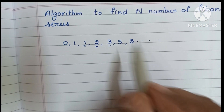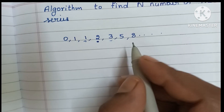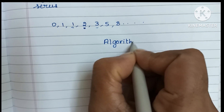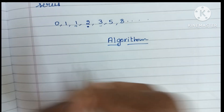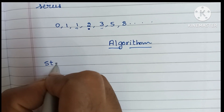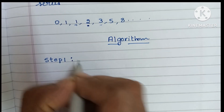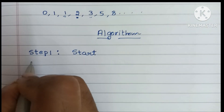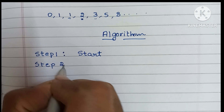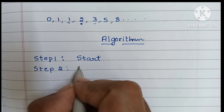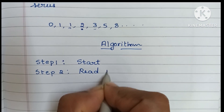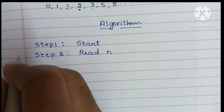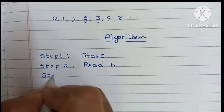Now let's start the algorithm. An algorithm is a step-by-step process to solve a problem. Step 1: an algorithm always starts with a start statement, so we write 'start'. Step 2: we write the input value — read N — because we have to find N number of Fibonacci series.